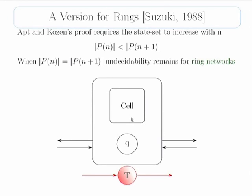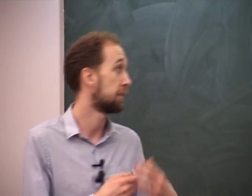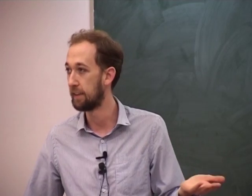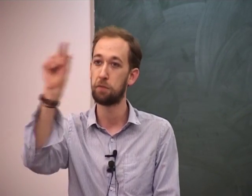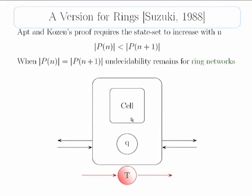The first result on more natural instances I know of is by Suzuki in 1988. He considers ring networks with N identical nodes, where nodes can talk to the neighbor on the left and the neighbor on the right, store finite information, and pass a token around. This is a much more natural problem, but unfortunately we're still undecidable. This is because with N nodes, each node plays the part of a single cell in a Turing machine tape — storing the cell value, passing the read-write head left or right to its neighbor — so they can simulate a Turing machine, giving us undecidability.